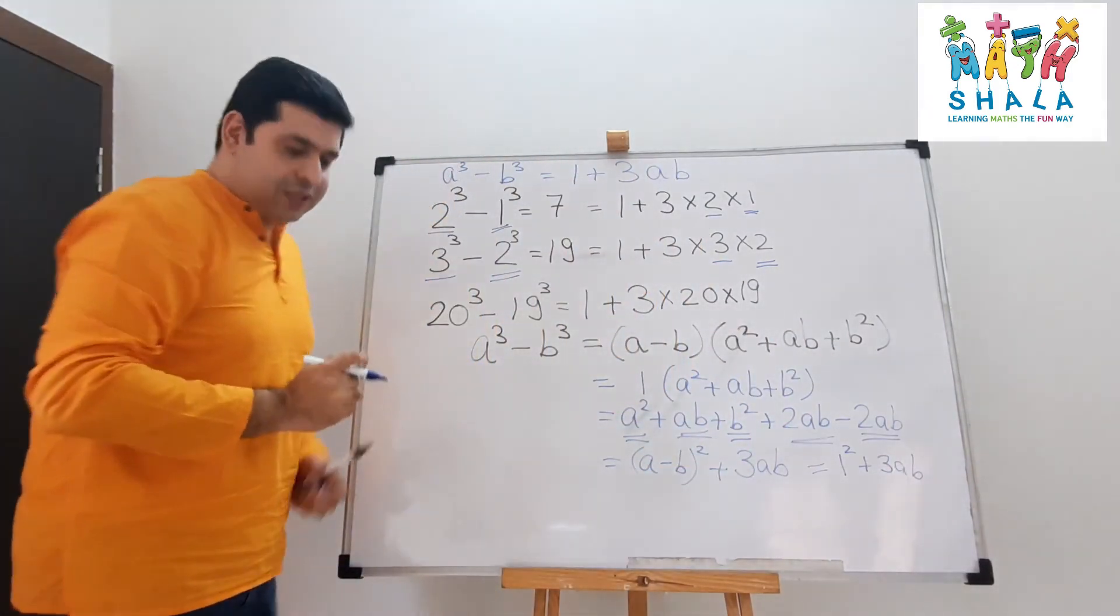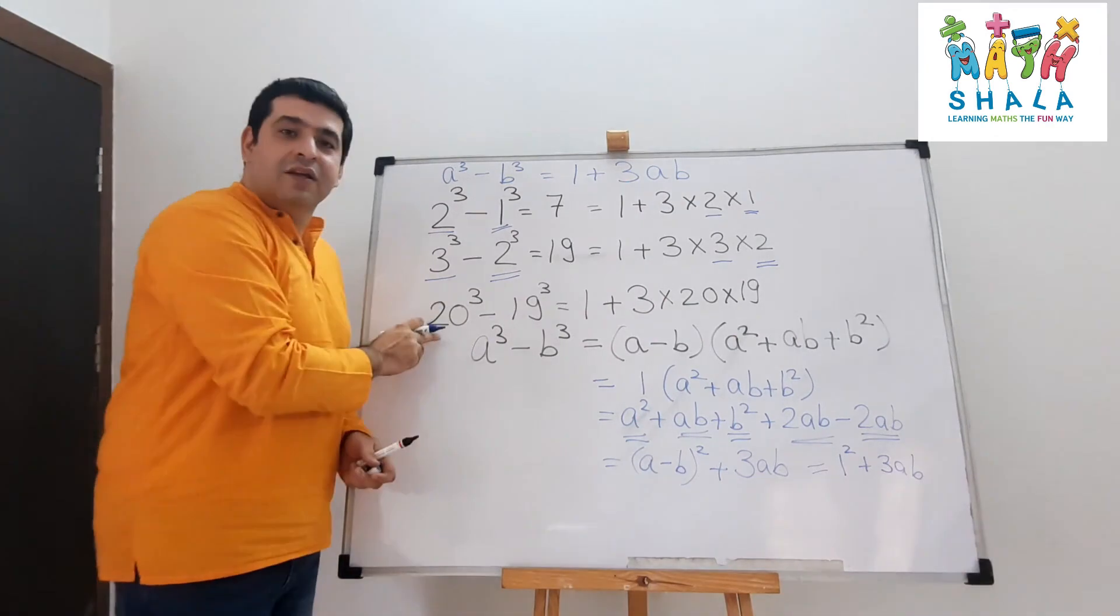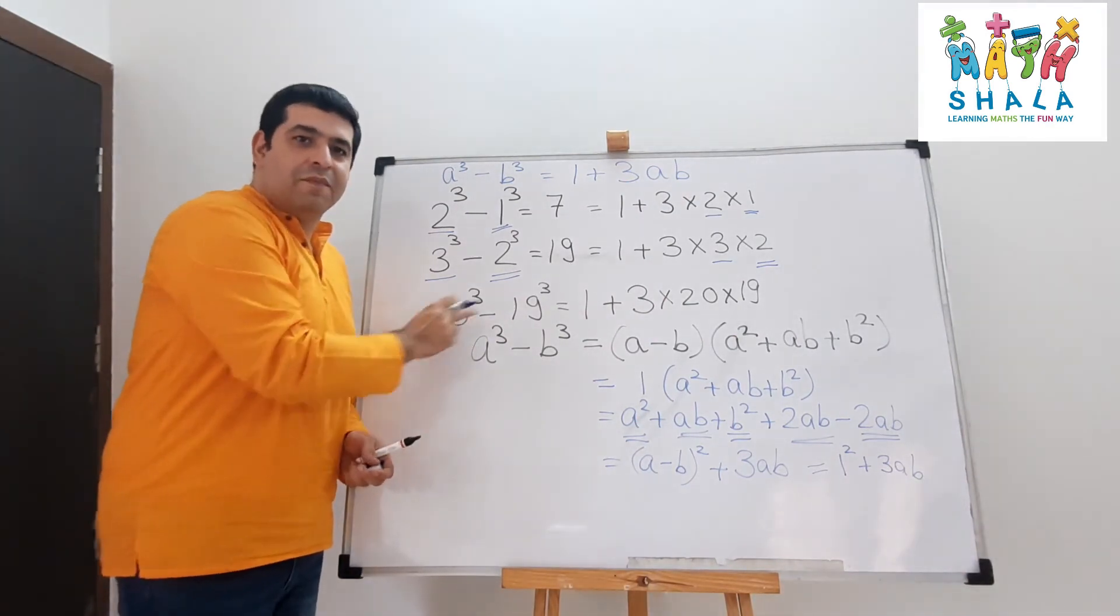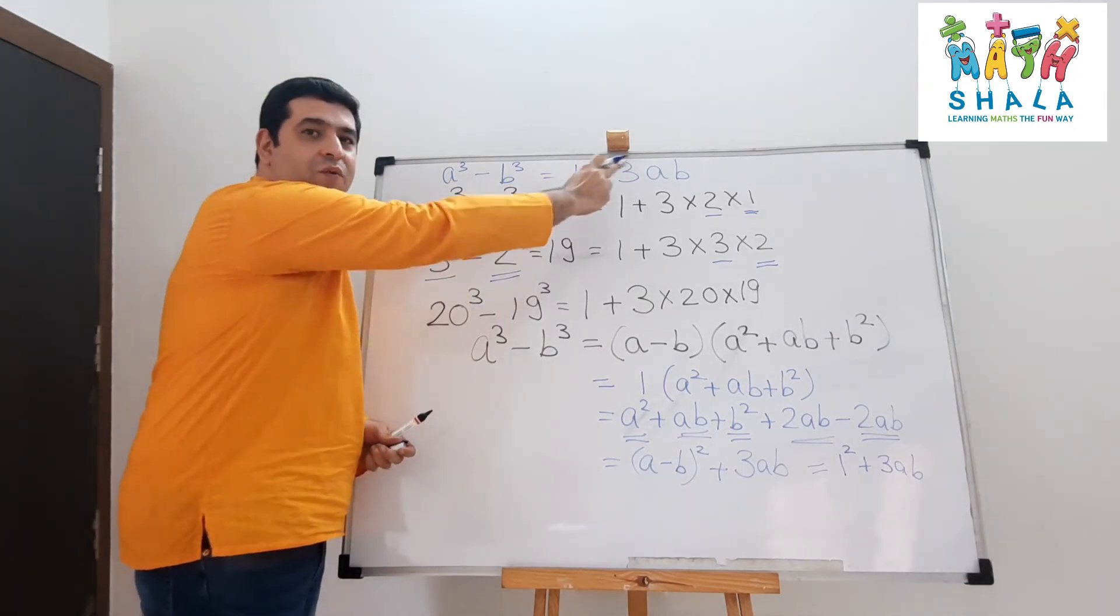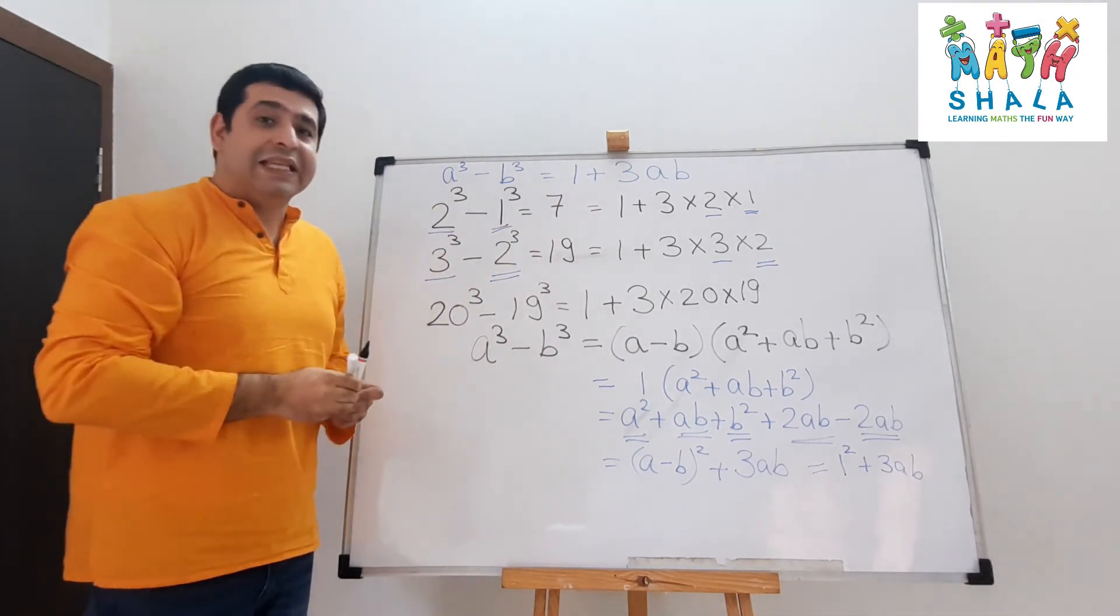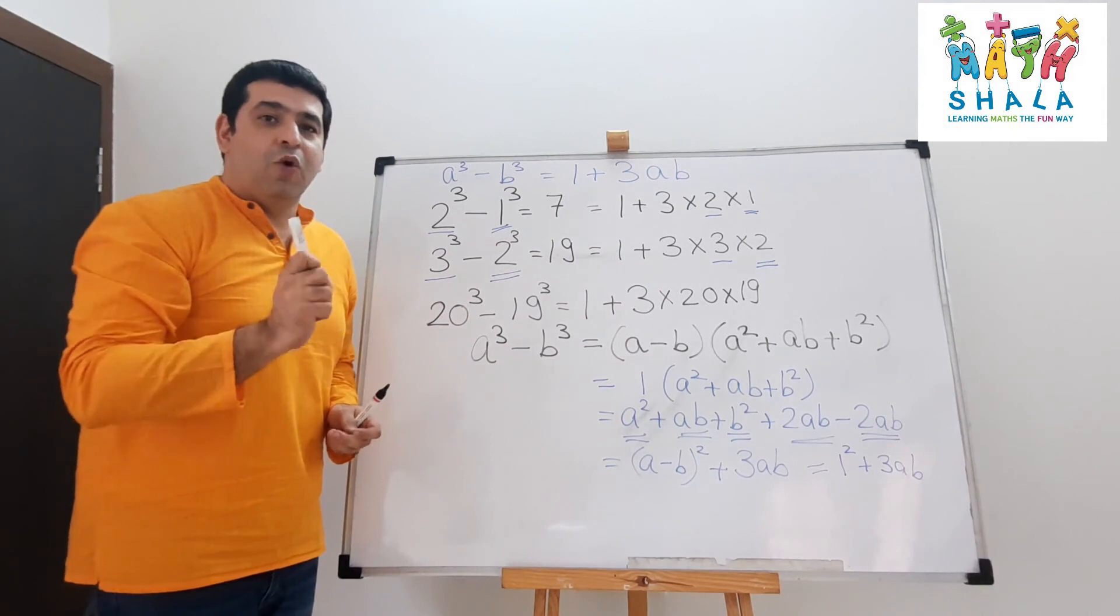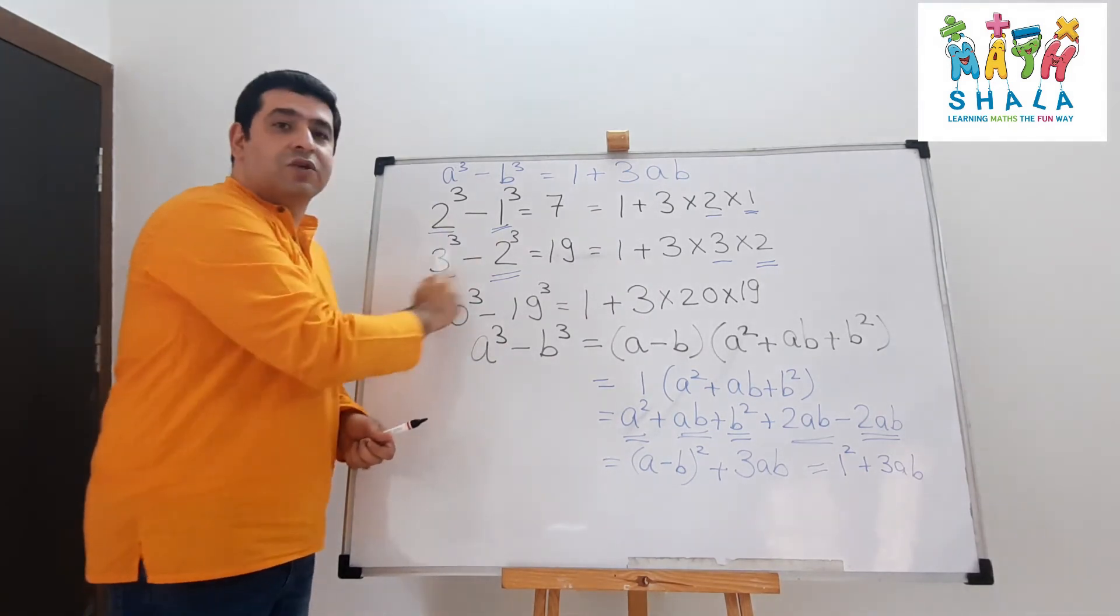So whenever you need to do this, instead of actually doing cube of a number minus cube of another number, straightaway say 1 plus 3ab. This technique works well only when there are two consecutive numbers.